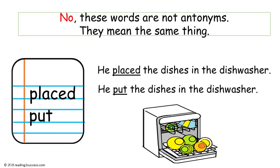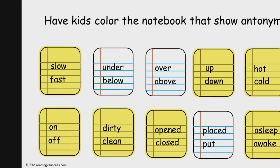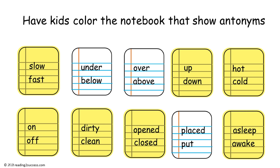The notebook with placed and put is not colored in because those words are not antonyms — they mean the same thing, as in: he placed the dishes in the dishwasher and he put the dishes in the dishwasher. The notebook with asleep and awake is colored in because those words are antonyms and mean opposite things, as in: the cat was asleep, the cat was awake. And this is the completed example.